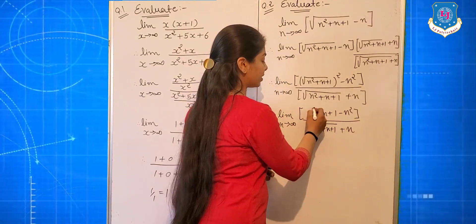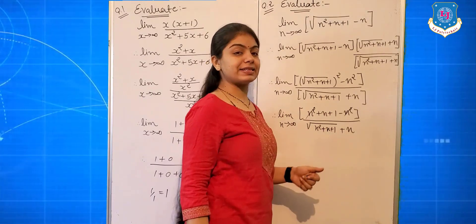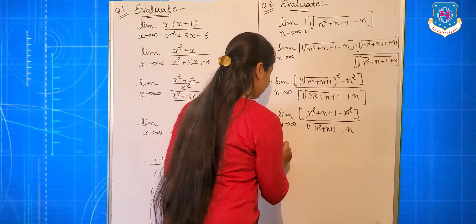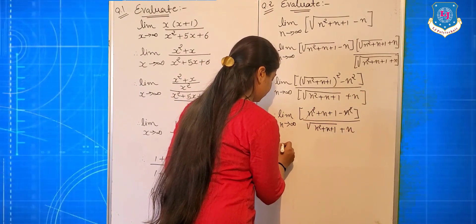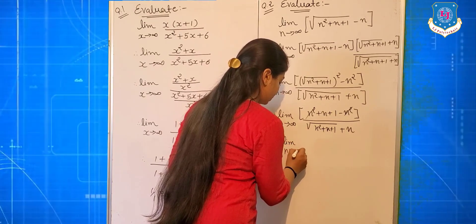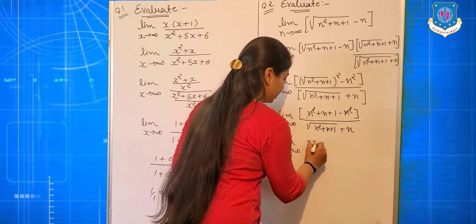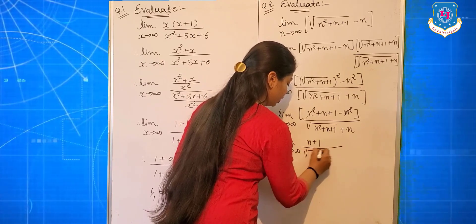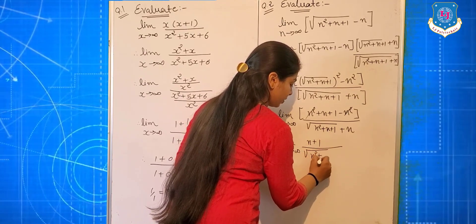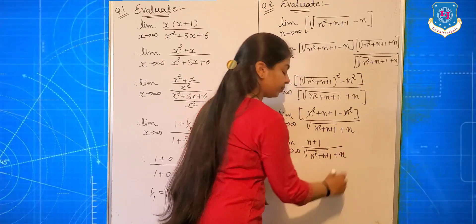Now, the n² terms cancel due to the plus and minus signs. The remaining term is: limit n tends to infinite of (n + 1) upon (√(n² + n + 1) + n).